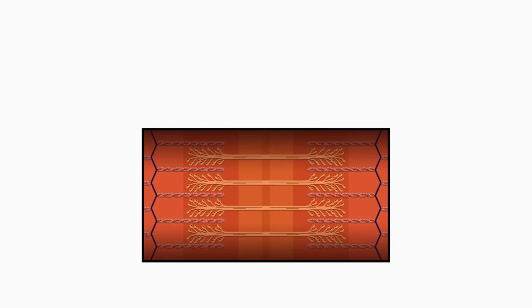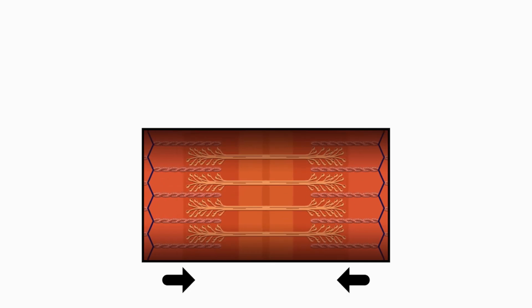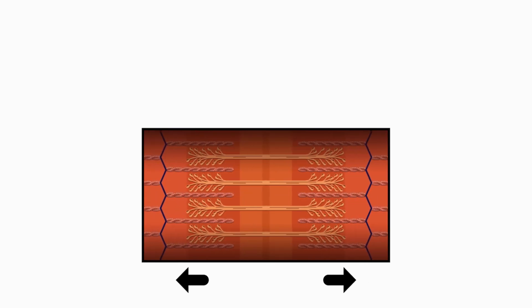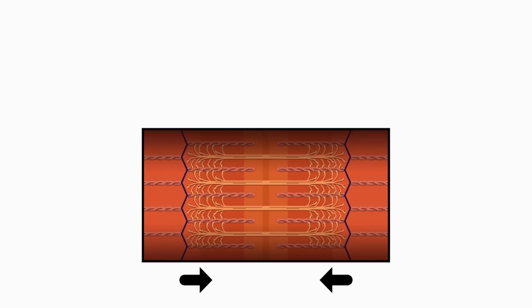Because the actin and the myosin are anchored on opposite sides, they are able to slide past each other causing contraction. Then, when they slide back, it causes the muscle to relax.